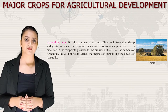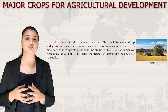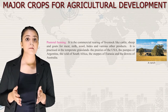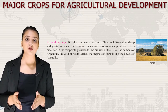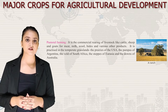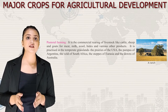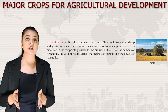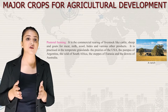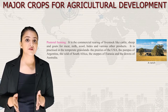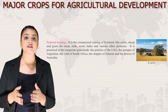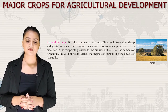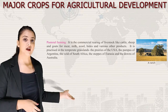Then we have pastoral farming — the commercial rearing of livestock like cattle, sheep and goats for meat, milk, wool and various other products. It is practiced in the temperate grasslands: the prairies of the USA, the pampas of Argentina, the veld of South Africa, the steppes of Eurasia and the downs of Australia. Here is an image of a ranch.